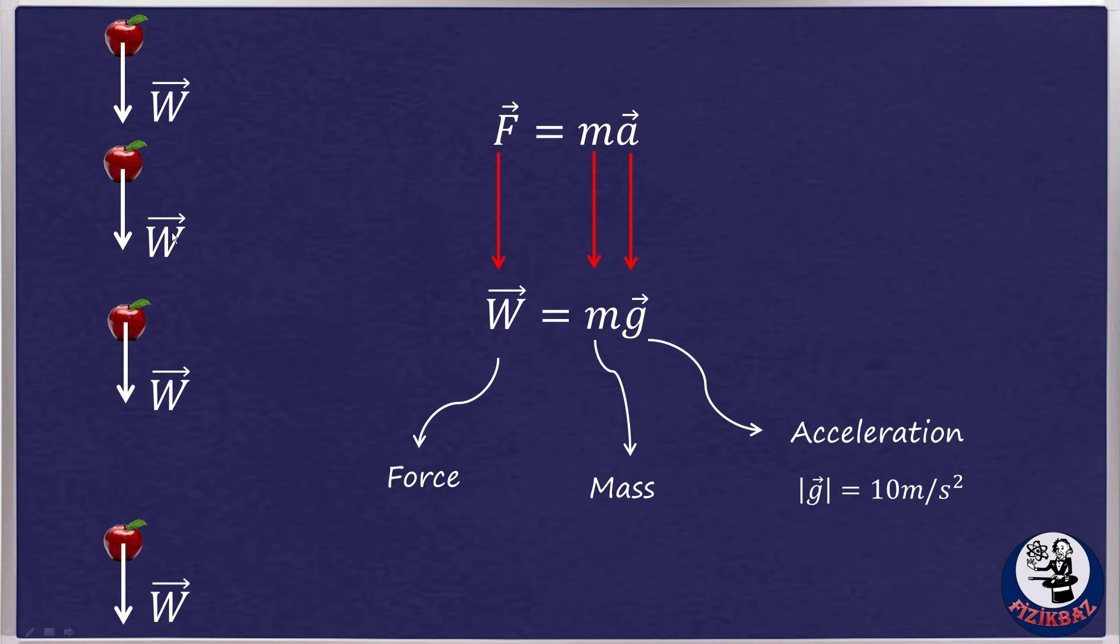Close to the Earth's surface, the acceleration caused by the pull of the Earth's gravity is called the acceleration of free fall, or the acceleration due to gravity. This quantity is given the symbol g, and its value is 10 meters per second squared close to the surface of the Earth.